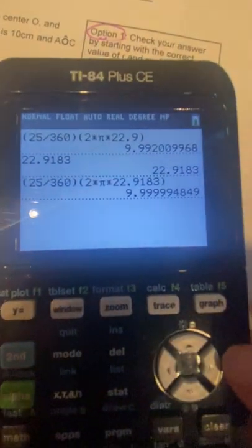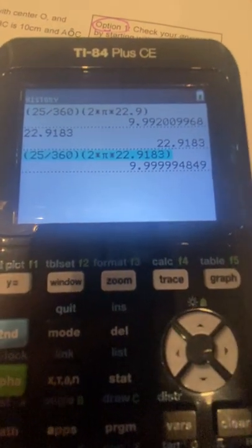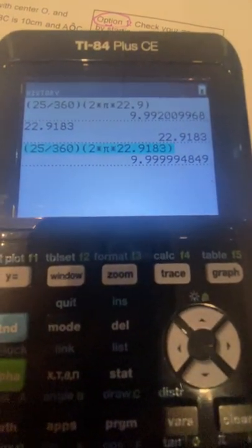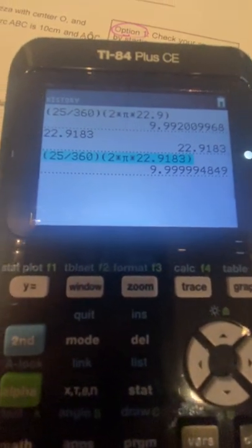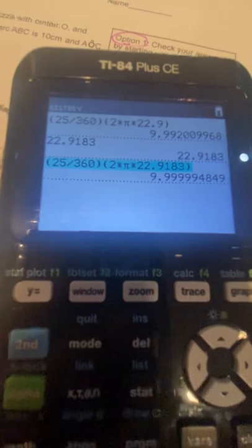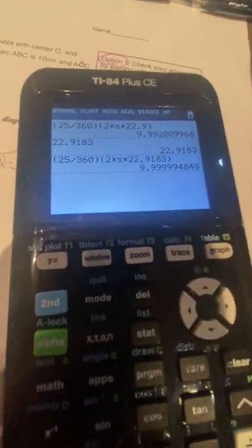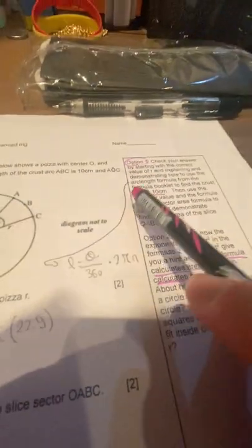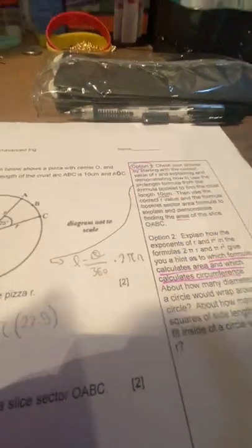So if we plug everything in the calculator, like shown here, 25 divided by 360 times 2 pi R which is 2 pi times 22.9183, we're gonna get 9.99999, which if we round to the whole number is gonna be 10, which then confirms that the length of the crust is 10 centimeters, like it's already given to us.